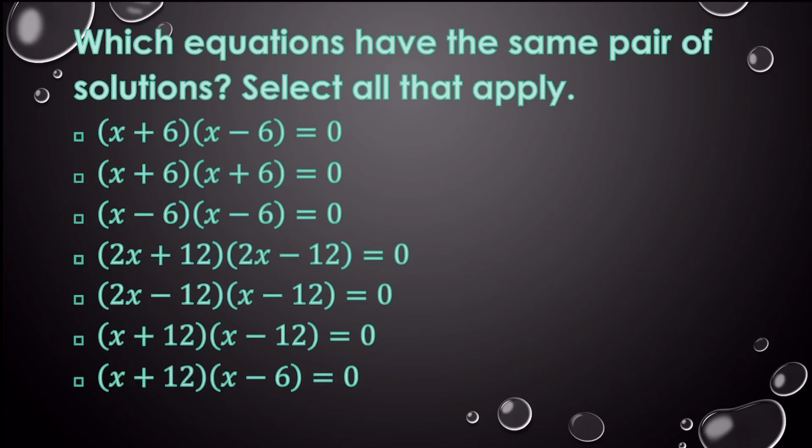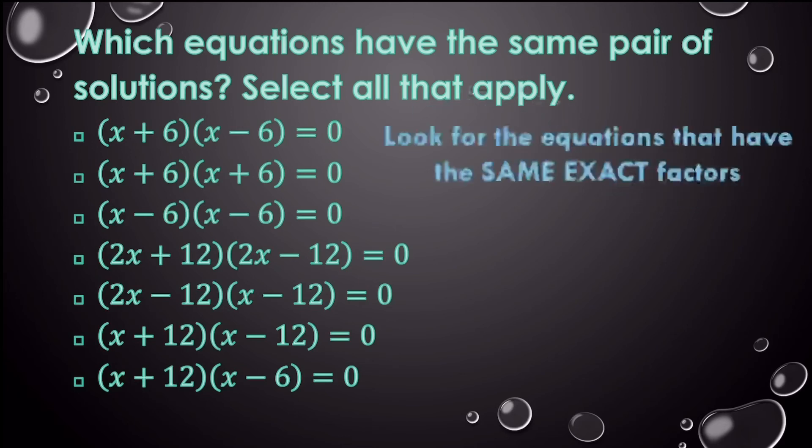So this is how you could see this property asked on a test or an assessment. Now they want to know which equations have the same pair of solutions. So which ones here would result in the same answer? If I look at this first one, I'm looking to see if the equations have the same exact factors. A lot of students say, oh yeah, 6 and 6. But look, that's a positive 6. That's a negative 6. So that's not a solution. That's not an answer for this problem.